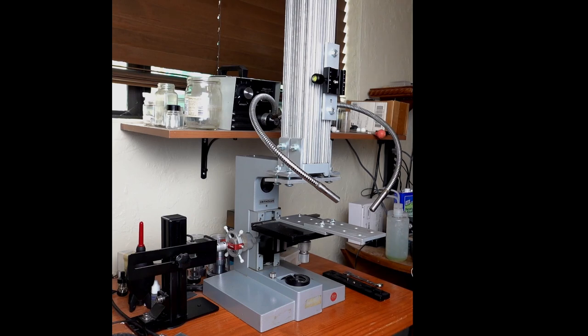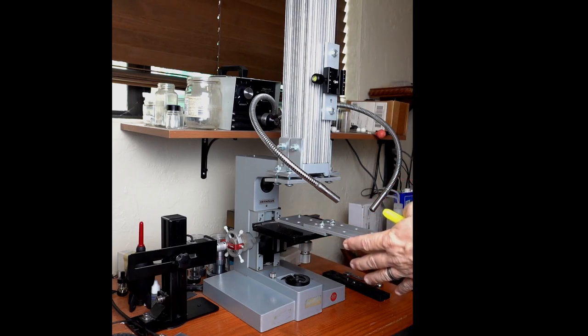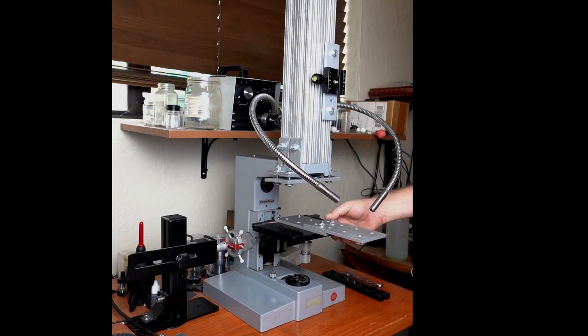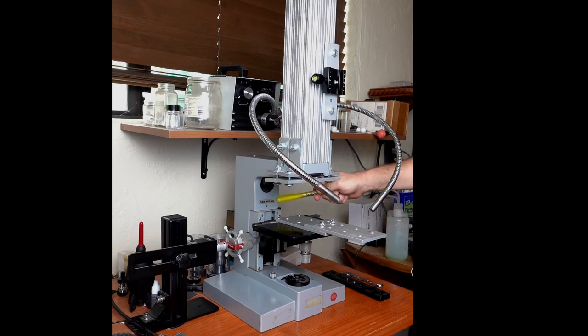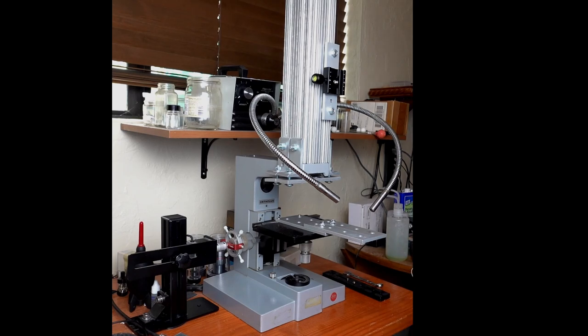To start with, I wanted to get XYZ control on a platform that's under the objective. A microscope stand is a really good way to do that because those tables have X, they have Y, and they have focusing built into them. And it's all very stable. So I looked on eBay and I bought a gutted Ortholux, Leitz Ortholux 2 stand. This is back when things were built really solid and heavy, which is what you want for this application.